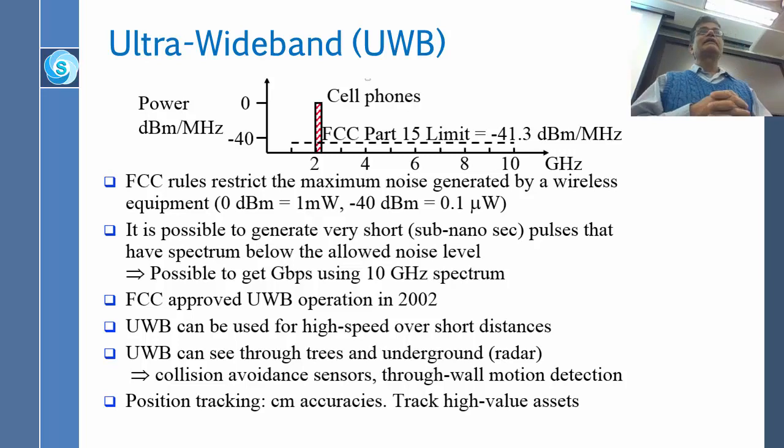And so, people started working on this standard at IEEE. That can be used for very high speed communication over a short distance. Because there is not much power, so it cannot go very far. But it can be very high speed. And UWB can see through trees, underground, collision and so on and so forth, through the wall motion detection and so on and so forth. So, anyway, interesting thing is because it is not just one frequency, it has some low frequency, some high frequency and so on and so forth. Low frequencies can go through the walls much better than the high frequency. The light cannot go through this wall, but 2.4 gigahertz can and if you have below that, maybe 1 megahertz that can go even more.